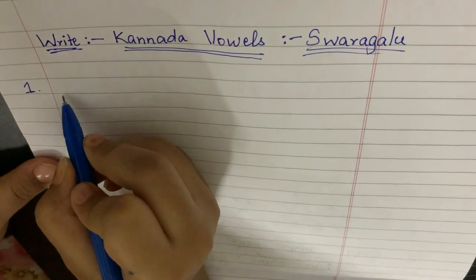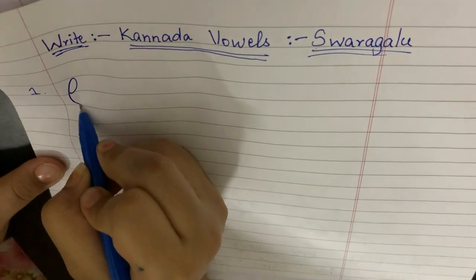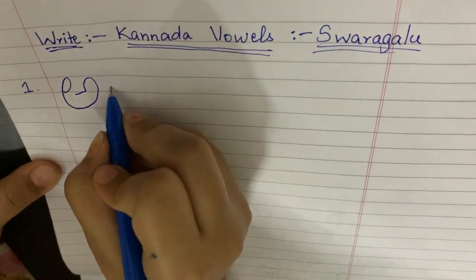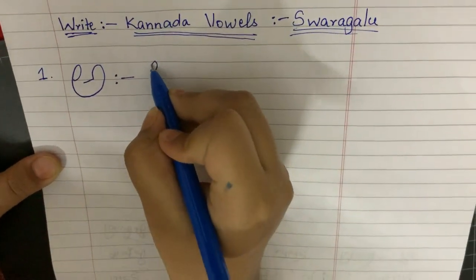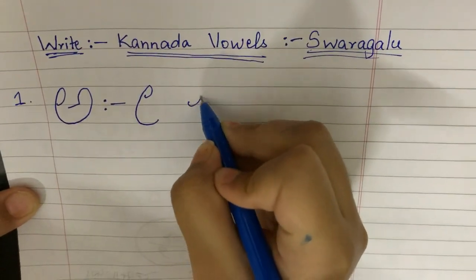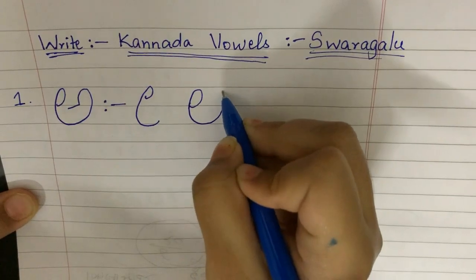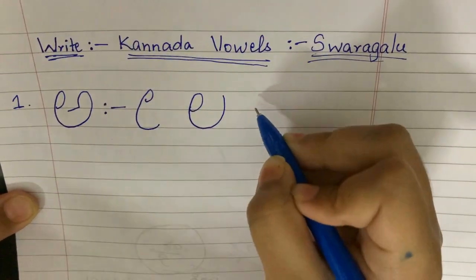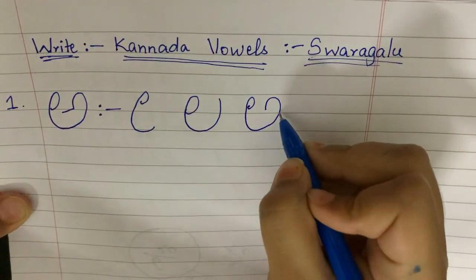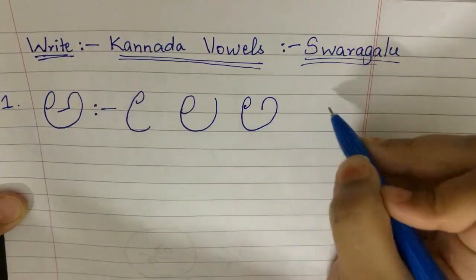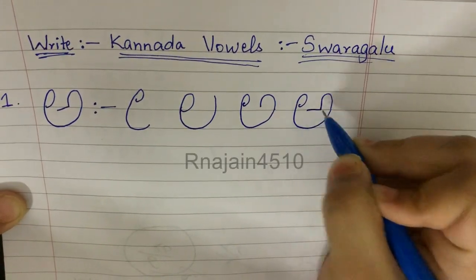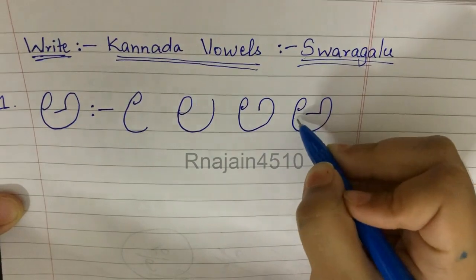The first letter in Kannada Swaragalu is O. The steps for O: first, make E. After E, make a curved line like a U shape. After that, you have to make a semicircle not touching to this line. After this, you have to make a sleeping line but not touching to E.